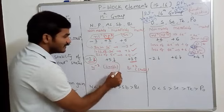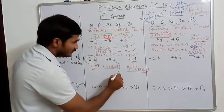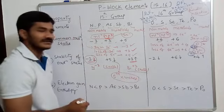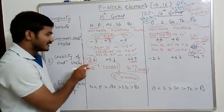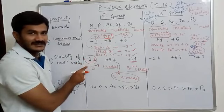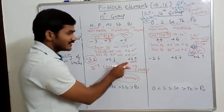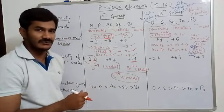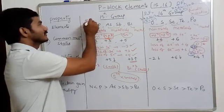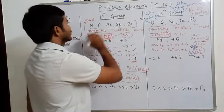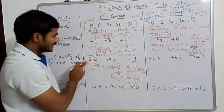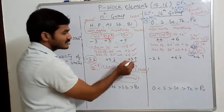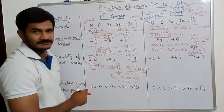Plus 5 stability decreases down the group, so bismuth cannot exhibit plus 5. Non-metals like nitrogen and phosphorus can gain electrons and exhibit minus 3. Metals like bismuth lose electrons and form plus 3. Similarly for Group 16, minus 2 stability decreases down the group because lower elements become more metallic and cannot gain electrons.